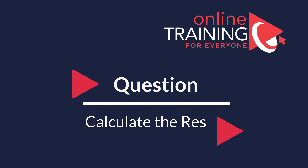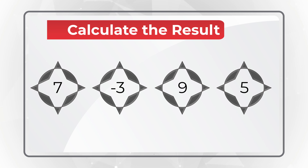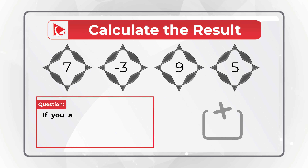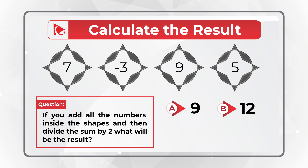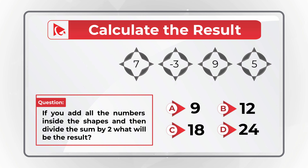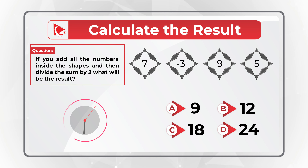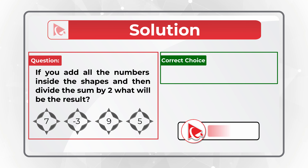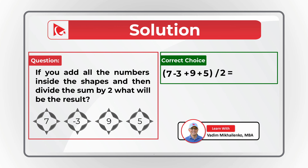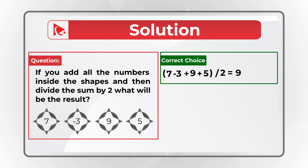Here's an amazing question to test your business math skills. You're presented with a set of numbers in a compass-like figure, and you need to add up all the numbers inside the shapes and then divide the sum by 2. Four choices: A: 9, B: 12, C: 18, D: 24. The math is straightforward: 7 minus 3 plus 9 plus 5 in parentheses, then divide the sum by 2. The result is 18 divided by 2, which equals 9. The correct answer is choice A, 9.